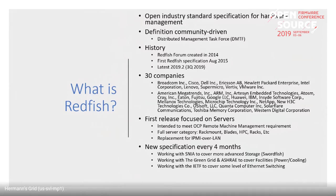30 companies make up the Redfish Group. There are two tiers: a promoter tier and a supporter tier. The top 10 companies are promoter companies and the bottom 20 are supporting companies — who you would expect in system management: Broadcom, Cisco, Dell, HPE, Intel, Lenovo, ARM, Google, IBM, and Western Digital.